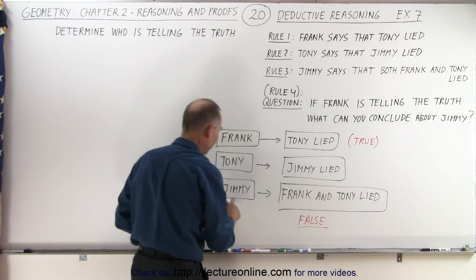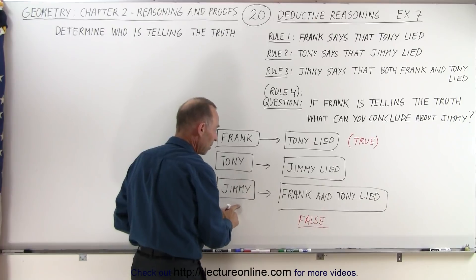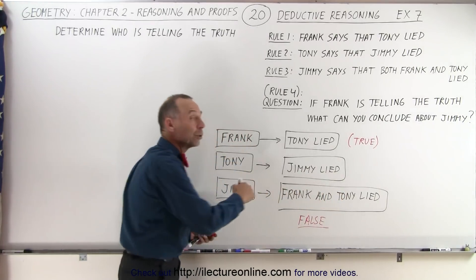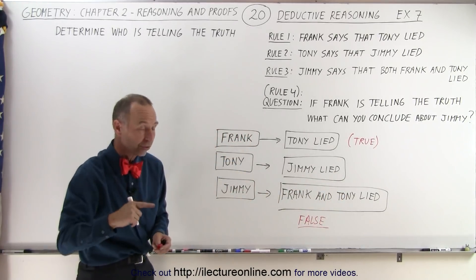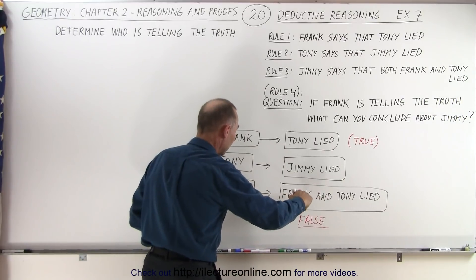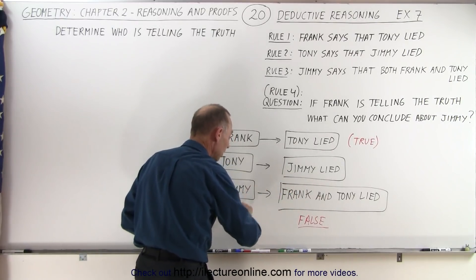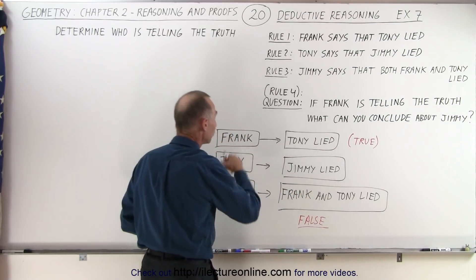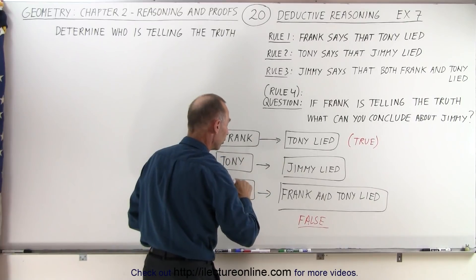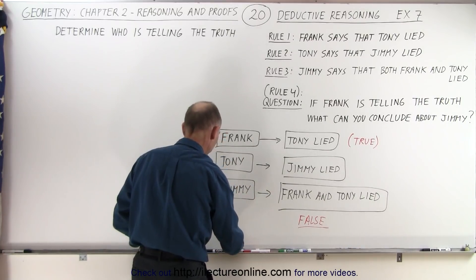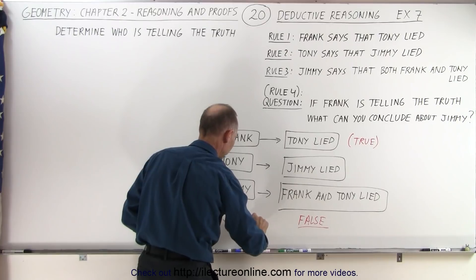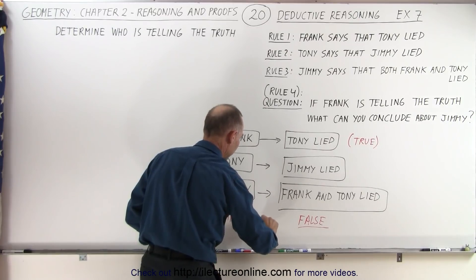And if the statement that Jimmy made — that both Frank and Tony lied — and now we know that that's a false statement, we can then conclude that Jimmy must be lying, because we know that Frank is telling the truth. So therefore, we can say that Jimmy is lying.